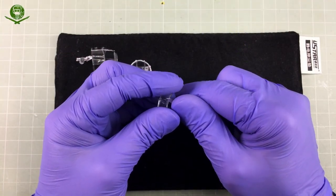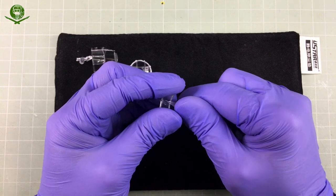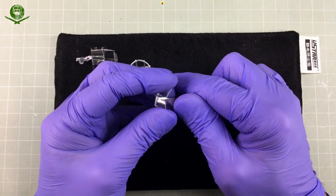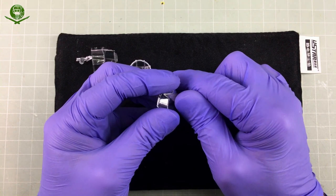For any little nubs left behind, don't be tempted to sand them. This plastic will grow opaque when sanded. Instead, carefully trim them back with a sharp knife.